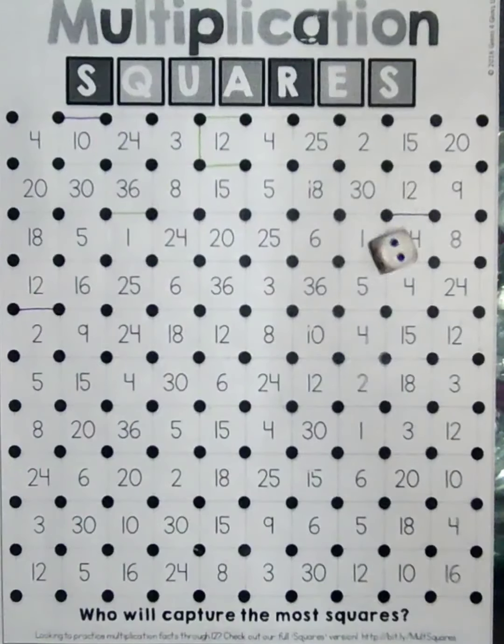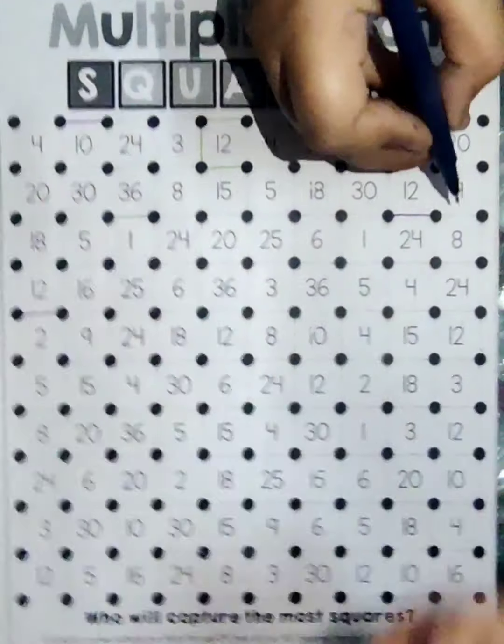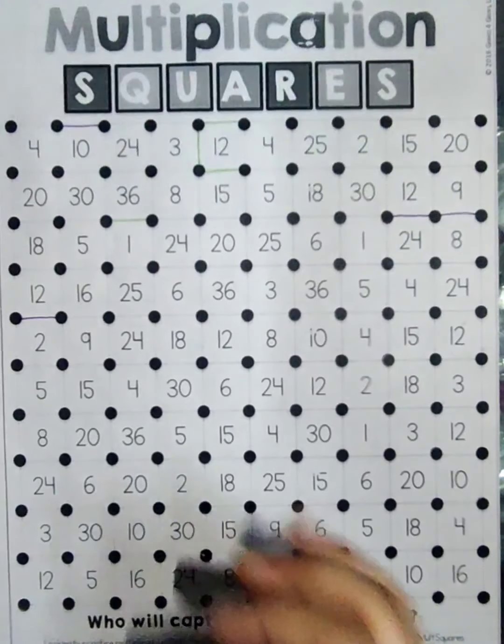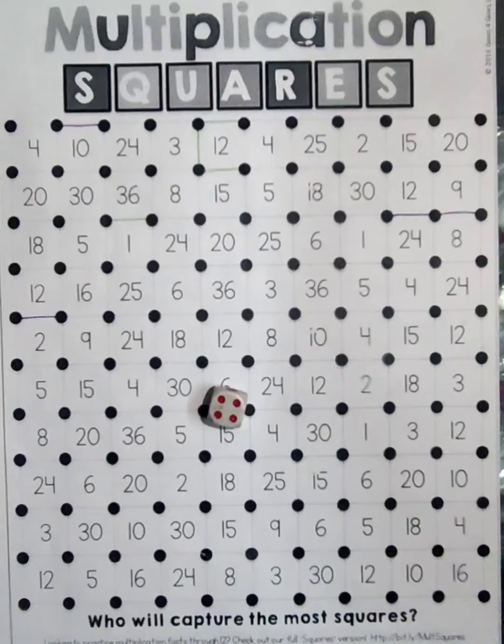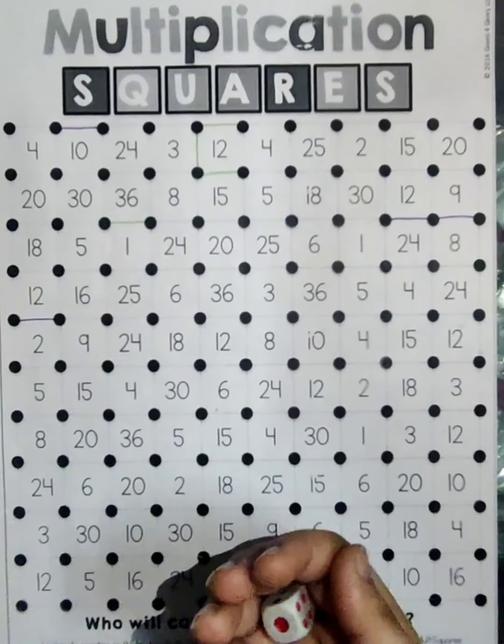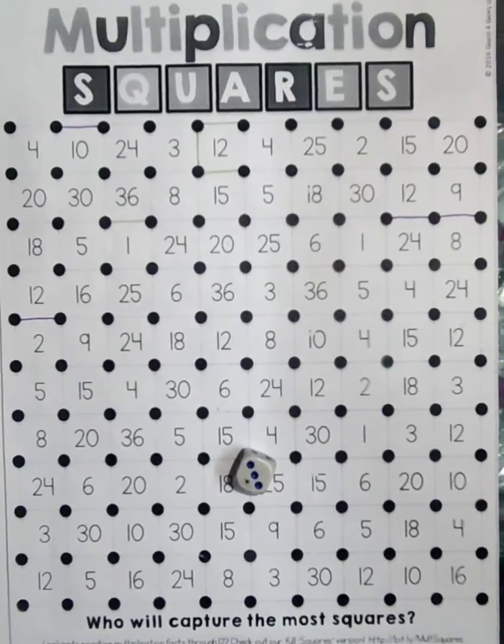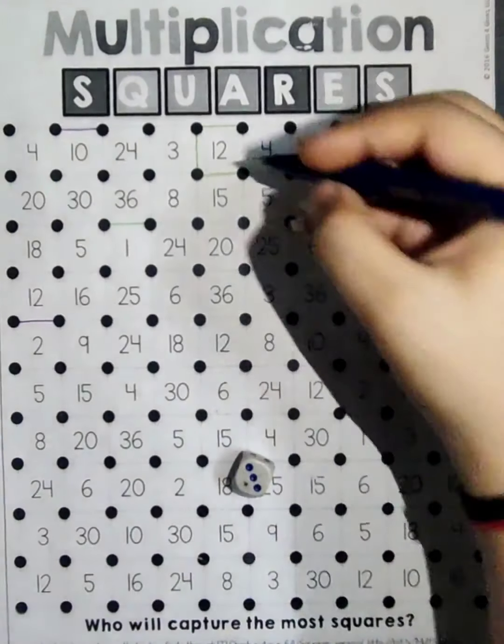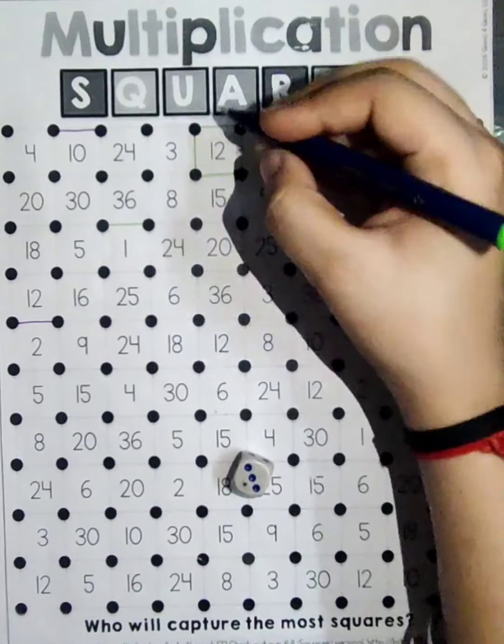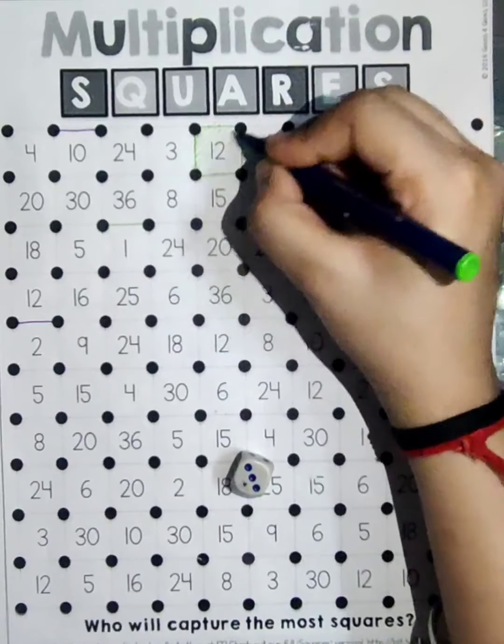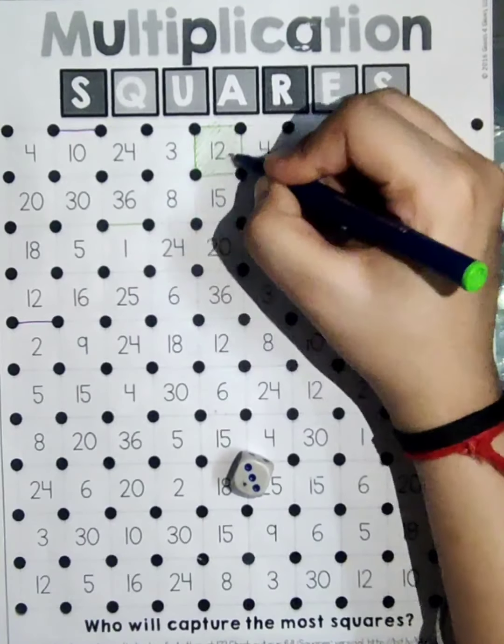She got four, and then two times four is eight. My turn, I got four and then four. Four times three is twelve, so that means again I can shade this twelfth box. This twelve box belongs to me. I am going to shade this box.